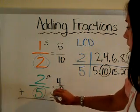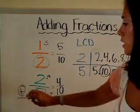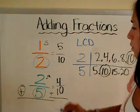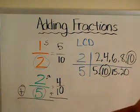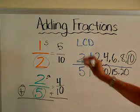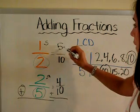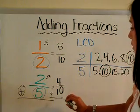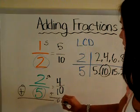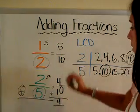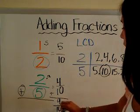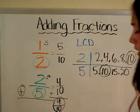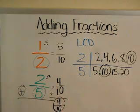Now we're ready to solve. We see an addition sign, so we're adding. If that was a subtraction sign, we would just be subtracting. So 5 plus 4 is 9, and the denominator stays the same. So our final answer is 9 over 10.